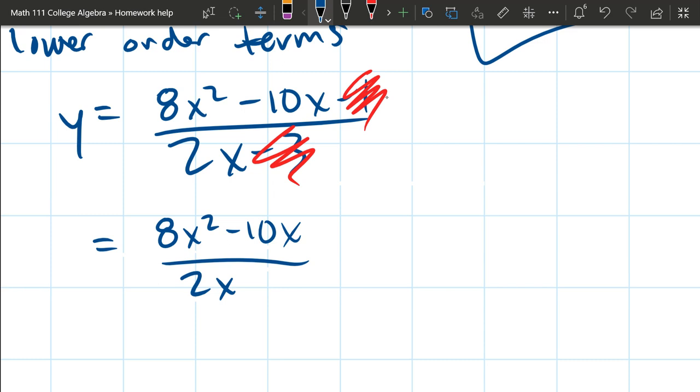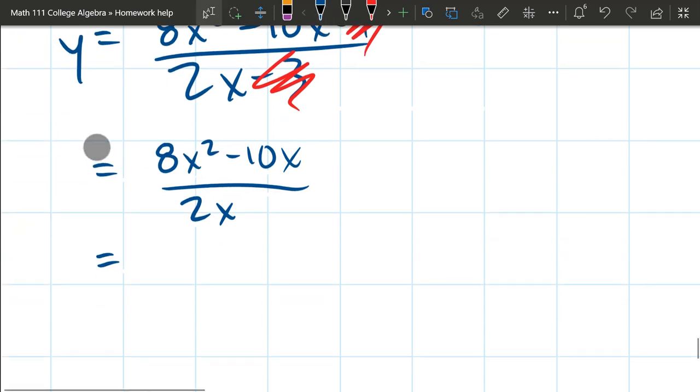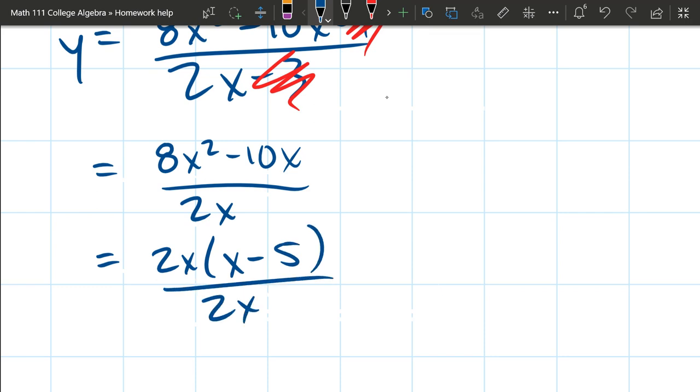And this is equal to 8x squared minus 10x divided by 2x. So let's go ahead and clean this up with some algebra. I can factor in the numerator. I can factor out a 2x. And there will be x minus 5. This cancels out really nicely. 2x cancels 2x. We get x minus 5.